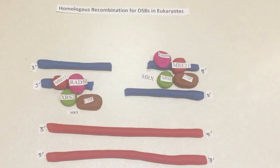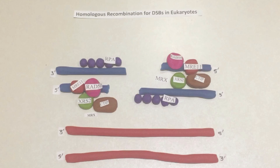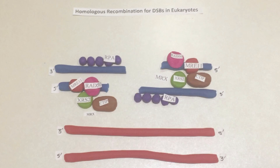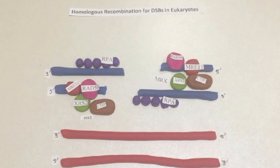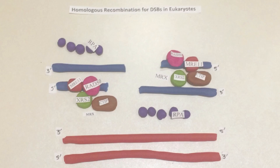Then, replication protein A (RPA) binds to single-stranded DNA (ssDNA), keeping ssDNA from binding to itself. RPA is composed of the subunits RPA1, RPA2, and RPA3.